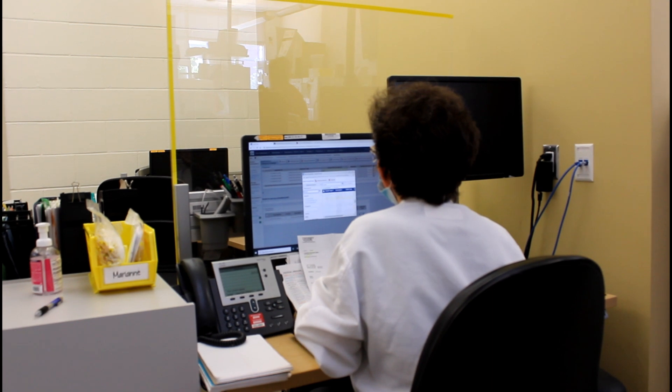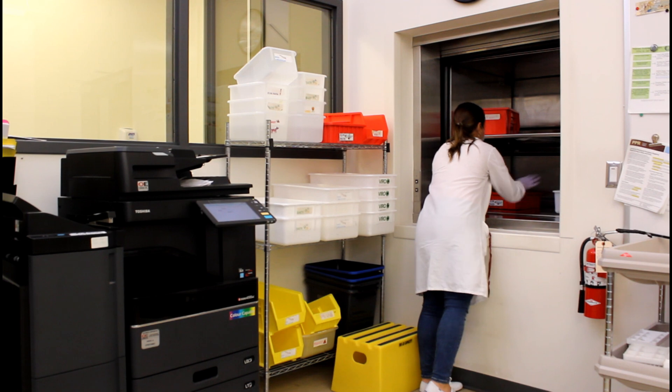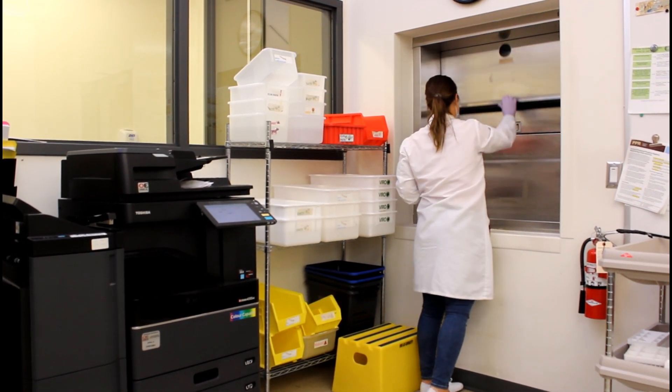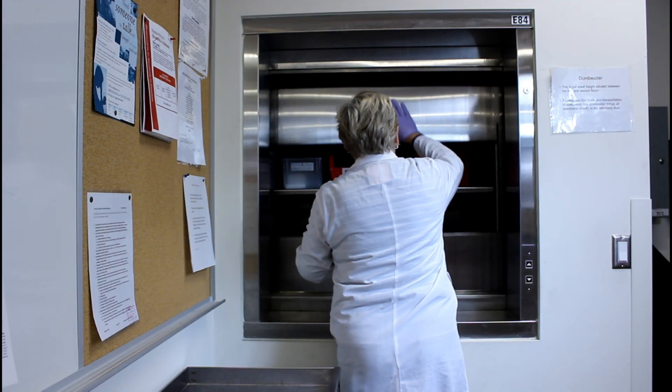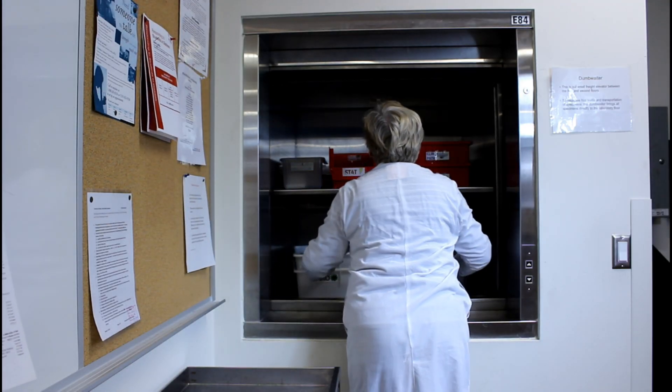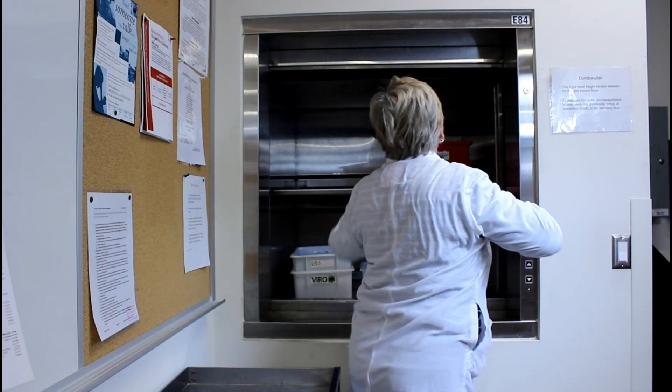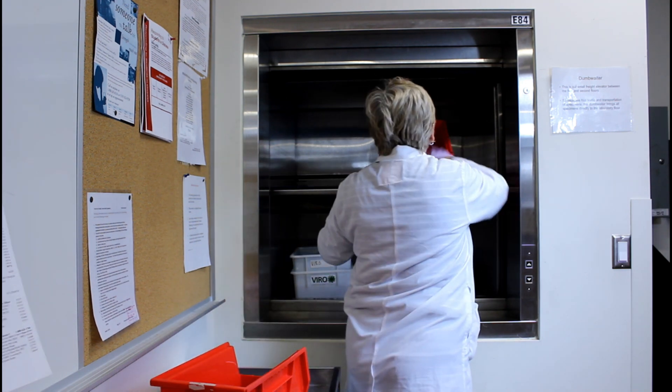Then the samples are entered into the computer system and sent up to the lab section. You can see here our staff are sending our samples up via the dumbwaiter to the second floor. When the samples arrive on the top floor they get to the bench and go through a second phase where they're double-checked for accuracy, and then they go on to testing after being checked in again.